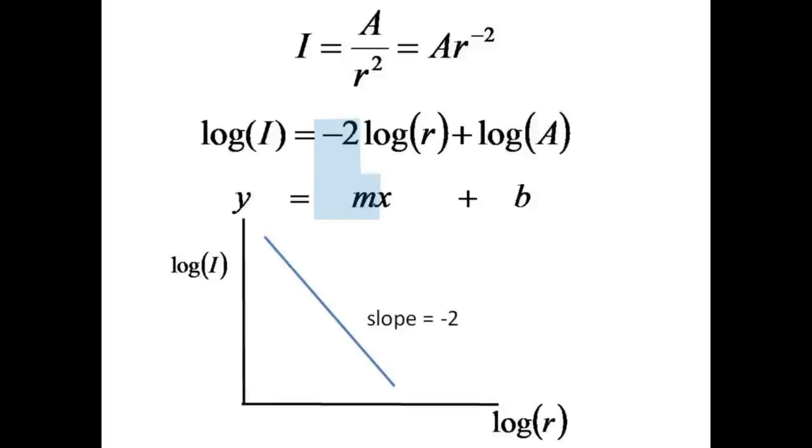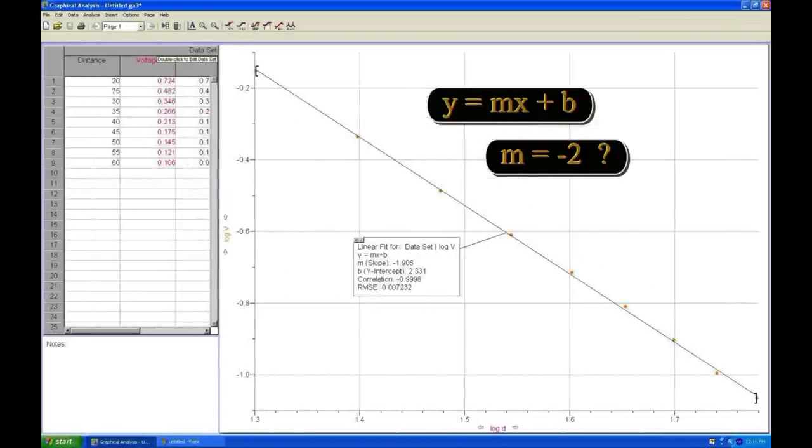Remember that plotting the log of intensity versus the log of distance is expected to be linear with a slope of negative 2. Here is what the log log graph might look like.